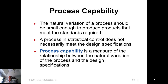The next topic is process capability. Process capability is the ability of a process to meet the specification requirements. If it is able to meet the specification requirements, then the process is said to be capable. Before we even try to test for process capability, you must make sure that the process is in control. Process being in control is a prerequisite for checking whether the process is capable.